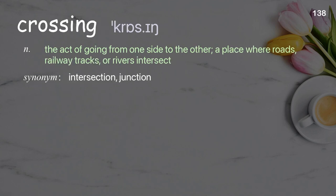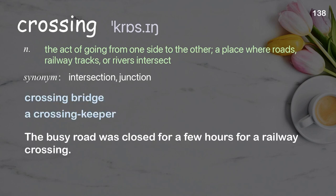Crossing: the act of going from one side to the other; a place where roads, railway tracks, or rivers intersect. Examples: crossing bridge, a crossing keeper. The busy road was closed for a few hours for a railway crossing.